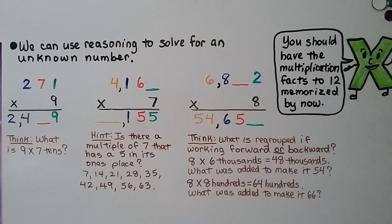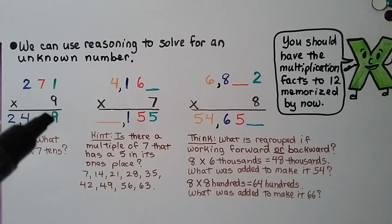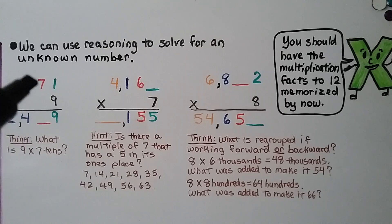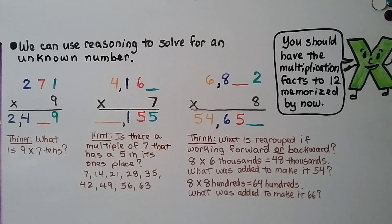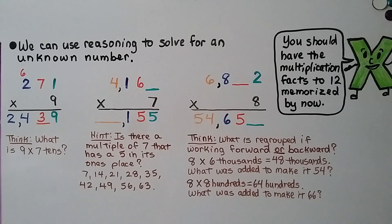Now we're going to do a little detective work on these next few problems. You should have the multiplication facts to 12 memorized. We can use reasoning to solve for an unknown number. If we look at this equation, we're missing a digit from the tens place in the product. Starting in the ones place, we have 9 times 1 — that's 9. Then 9 times 7 tens: 9 times 7 is 63, we regroup a 6 and write a 3 down here. Then 9 times 2 hundreds: 9 times 2 is 18 plus 6 more — that's 24. The answer is 2,439; the missing digit was a 3.